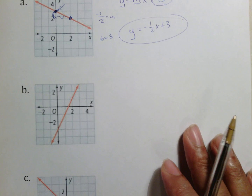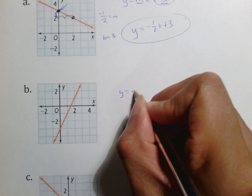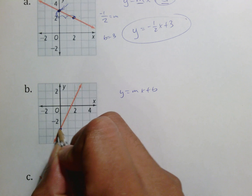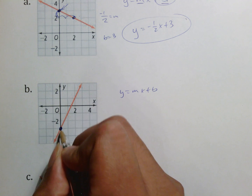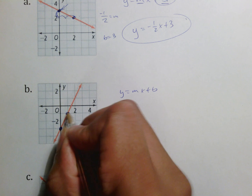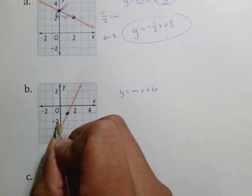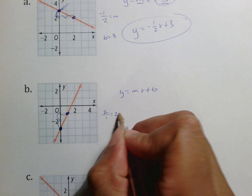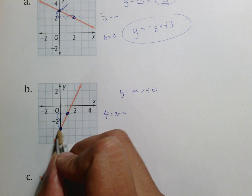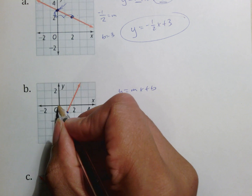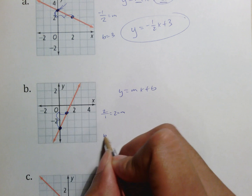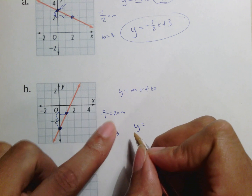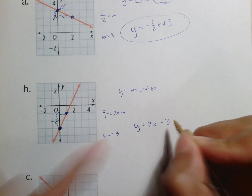Looking at example b: y equals mx plus b. Two good points — one good point is typically on the y-axis. Rise over run is up 2 over 1, which means 2 is my m. The y-intercept crosses the y-axis at negative 3, so b is negative 3. The final answer is y equals 2x minus 3.